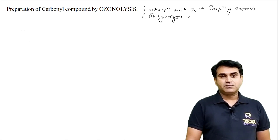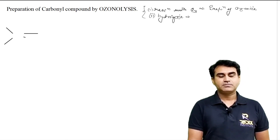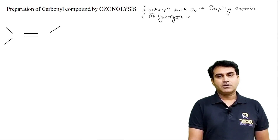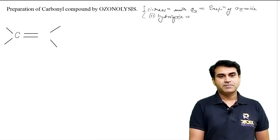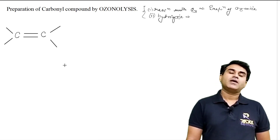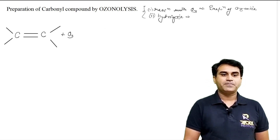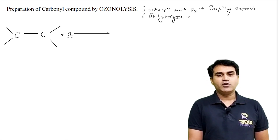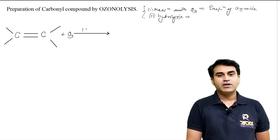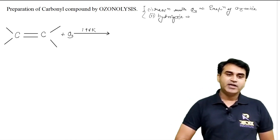There is an alkene; alkene में यह double bond है and rest of the places other groups are attached. So there is one carbon, there is another carbon, and then we react it with ozone O3 at very low temperature, around 196 Kelvin. तो ozonide का formation होता है.